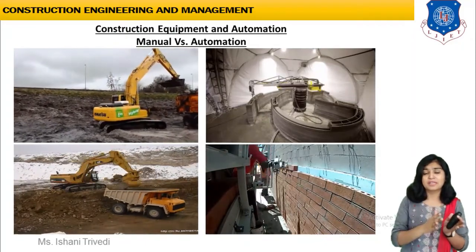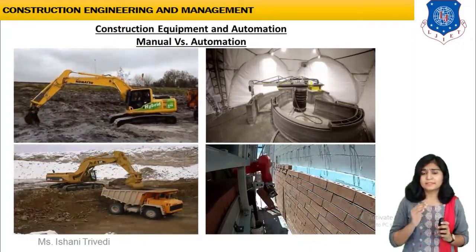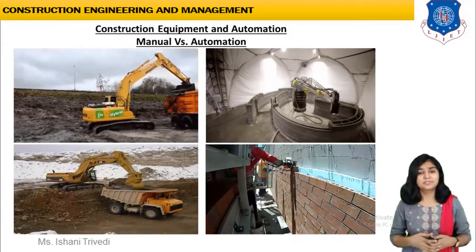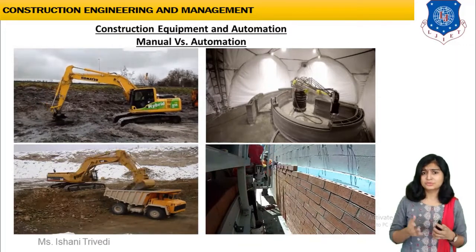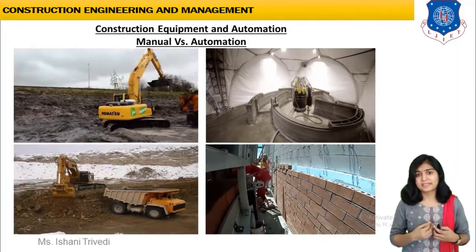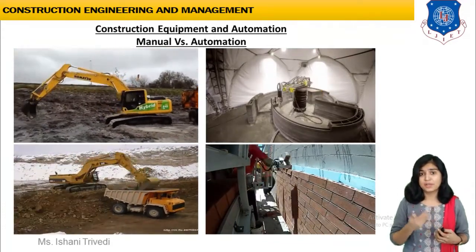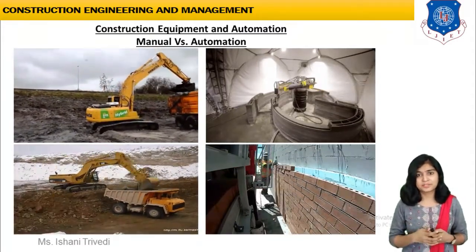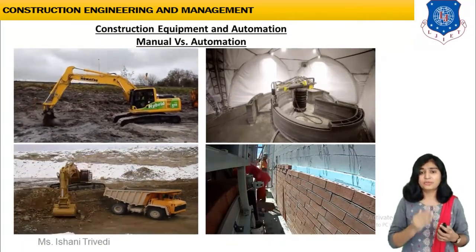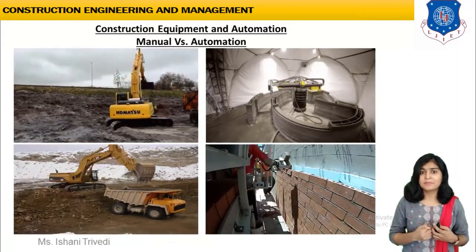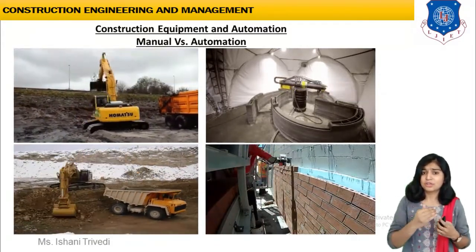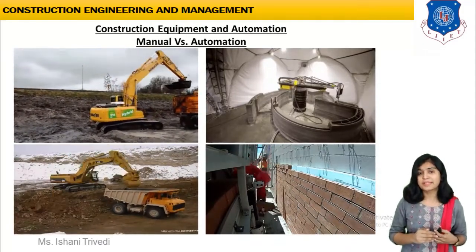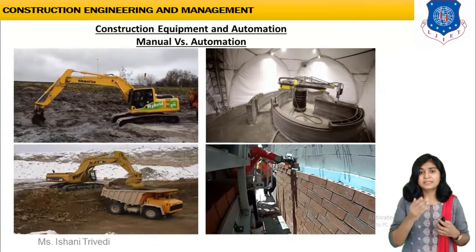I am demonstrating how manual and automation differ from each other through video clips. On the leftmost side, you can see an excavator excavating the soil, moving earth, while a man operates from the operating chamber where the controls are given. On the right side, in the automated part, the video clip shows a full concrete structure being automatically made with the help of a robotic arm — this is 3D printing technology for concrete structures.